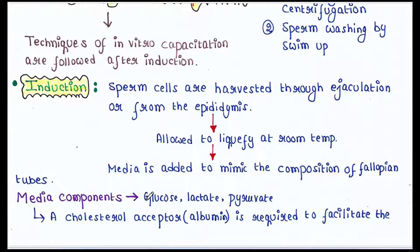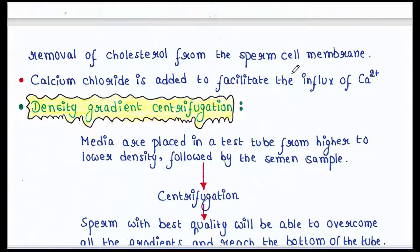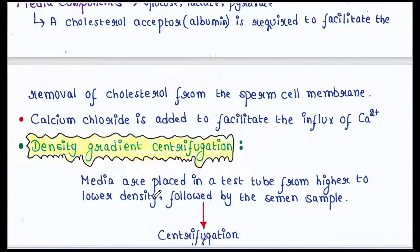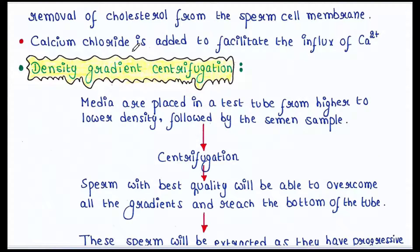The media components include glucose, lactate, and pyruvate — these are energy sources for the sperm. A cholesterol acceptor, albumin, is also required to facilitate the removal of cholesterol from the sperm cell membrane, so albumin is added to the media. The media also contains calcium chloride to facilitate the influx of calcium. The importance of cholesterol removal and calcium influx was explained in the previous lecture on in vivo capacitation.